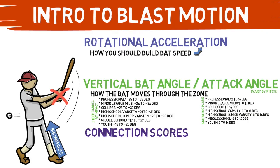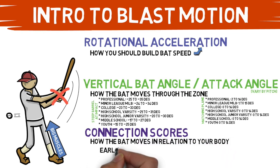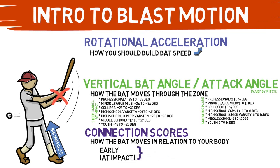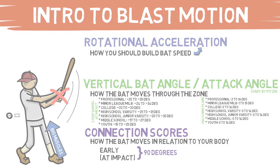Lastly is the connection score. This is how your bat moves relative to your body. It's measured at two points: early connection and then your connection at impact. This is a comparison of your bat angle compared to your spinal tilt. Both of these scores should be as close to 90 degrees as possible to make sure that you have a connected swing that stays on plane for the longest period of time.